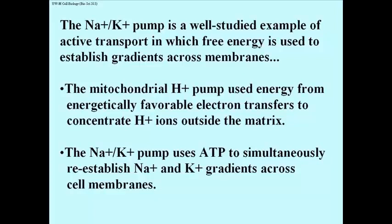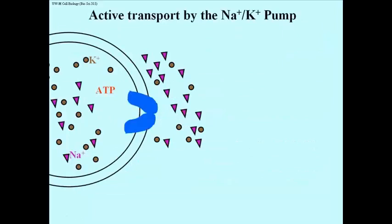The sodium-potassium pump gets its free energy from ATP. And it uses that ATP to re-establish those correct sodium and potassium gradients across cell membrane. So we start with ATP in the cell. The cell is off to the left. We have a sodium-potassium pump protein in blue shown here, and we have sodium shown as purple triangles and potassium shown as brown spheres.